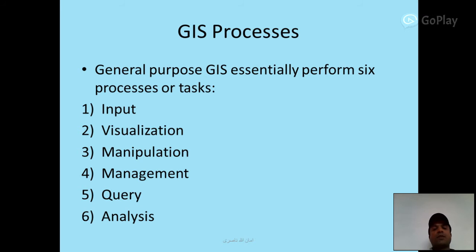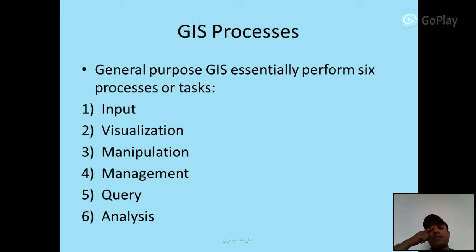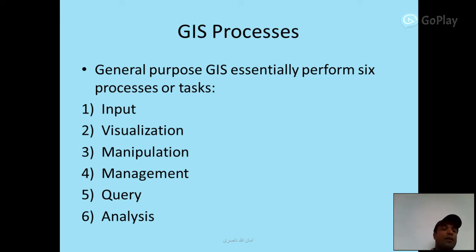GIS Processes: general-purpose GIS essentially performs six processes or tasks — input, visualization, manipulation, management, query, and analysis.